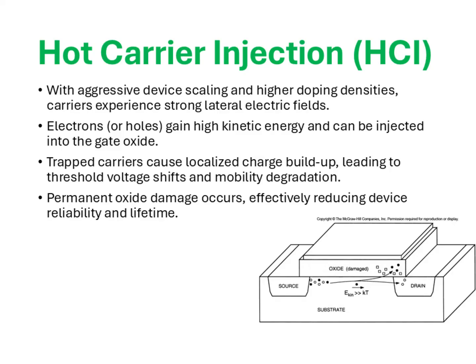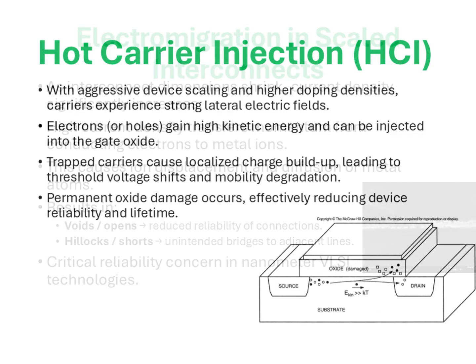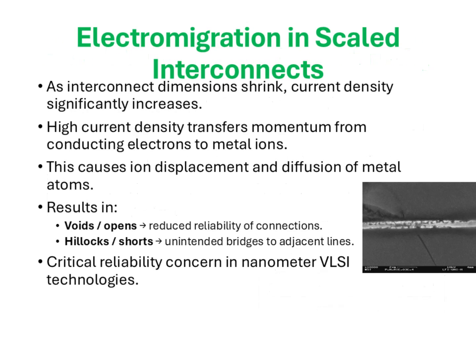Therefore, modern device engineers carefully optimize channel doping, drain engineering, and oxide materials to mitigate this effect. Now that we have understood reliability issues inside the transistor channel such as hot carrier injection, let us shift our focus to another critical reliability problem — this time in the interconnects that carry signals and power across the chip. This phenomenon is called electromigration.